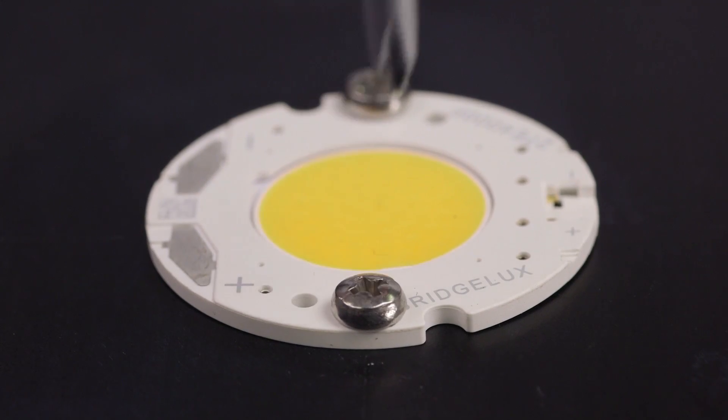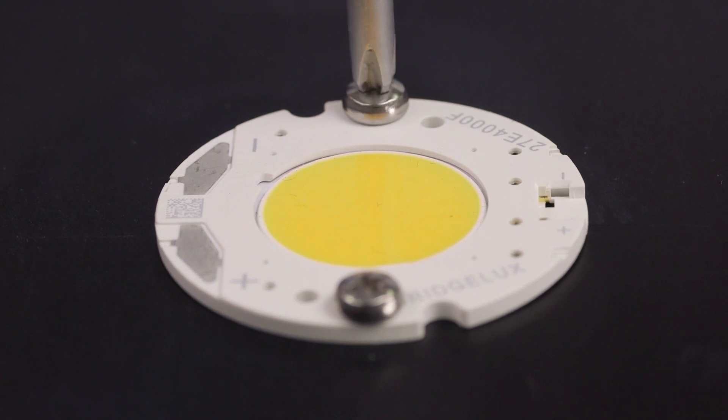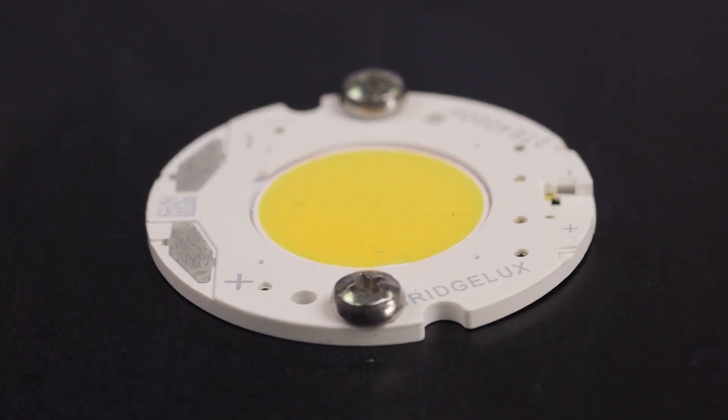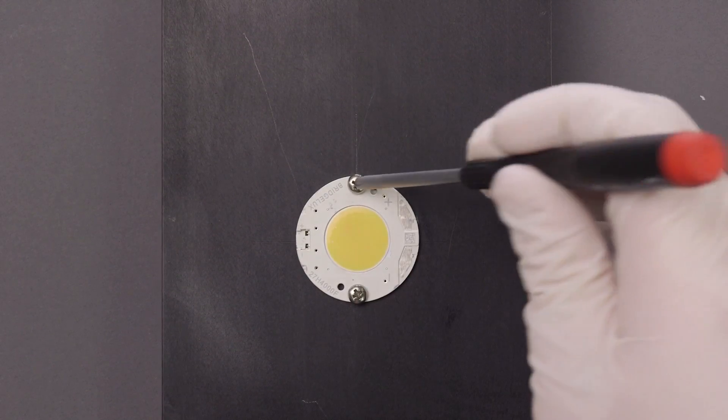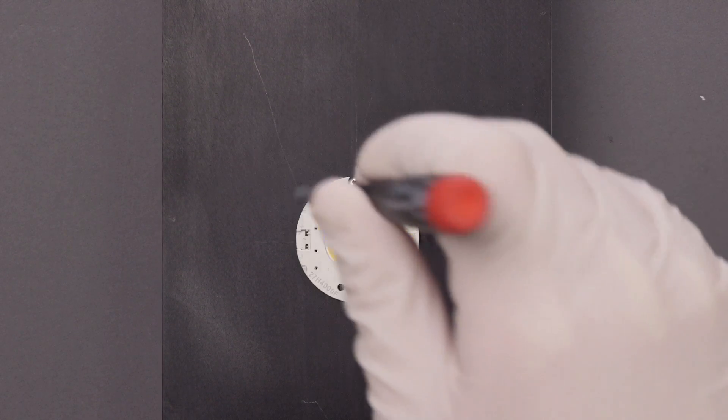Screws should be tightened in an alternating method moving from screw to screw so as not to torque down completely on one side before the other. The tightening should be done with quarter or half turns and alternating back and forth between the screws.